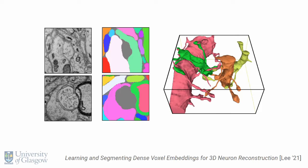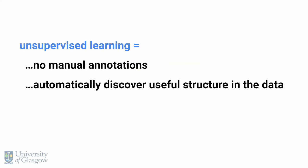And that's what unsupervised learning tries to do. In unsupervised learning, we assume we still have access to a lot of data, but we don't require that data to have been annotated by a human. Instead, we'll rely on our models and algorithms to automatically discover the interesting latent structure in that data, which will allow us to solve our tasks. One popular method for unsupervised learning is generative modelling.